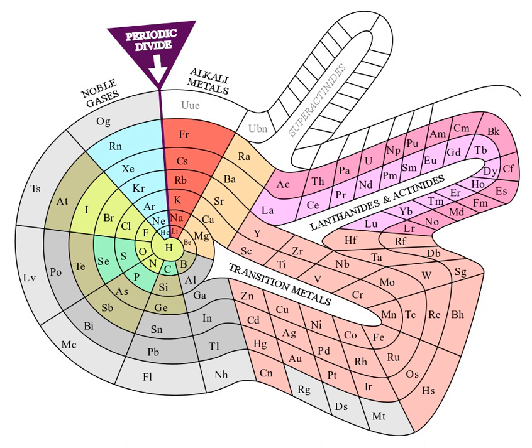For example, the alkali metals and the coinage metals are in the same column because both groups tend to have a valence of one. This format is still used by many, as shown by this contemporary Russian short-form table, which includes all elements and element names until roentgenium.